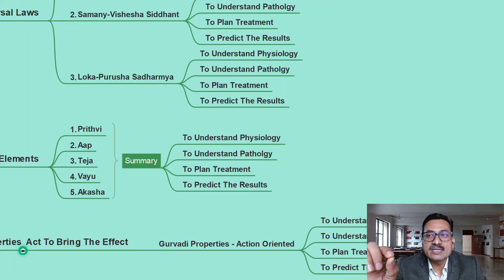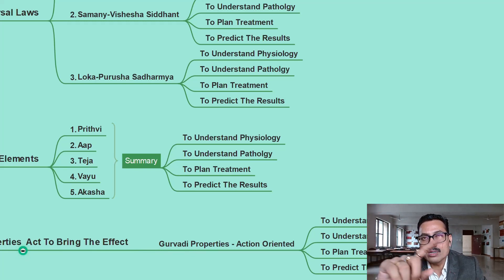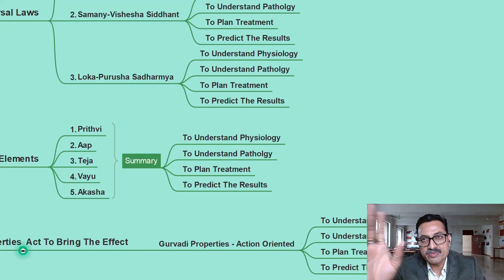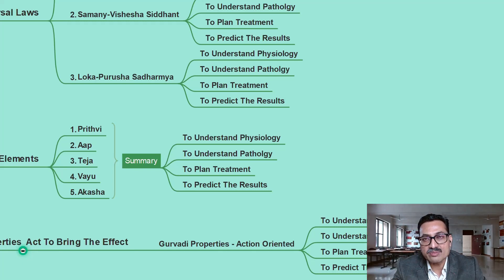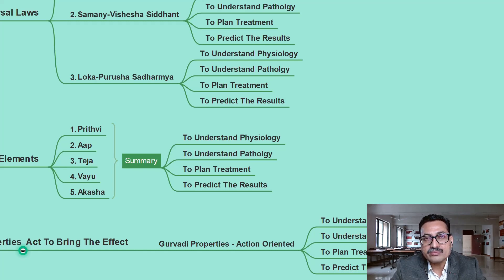Loka Purusha Sadharmaya: whatever is outside is the same inside, and whatever is inside is the same outside. You can identify by homologous observation — what similar features exist outside can be understood to help a particular endogenous factor of the body via an exogenous factor. For example, iron exists outside; once it enters the blood it becomes the iron content of the blood — hemoglobin is the endogenous form of iron. In that way, Loka Purusha Sadharmaya should be understood.